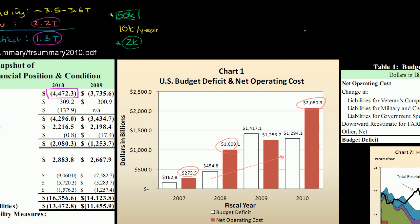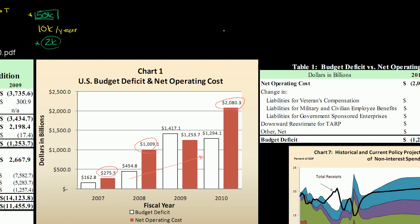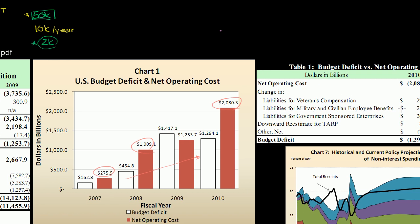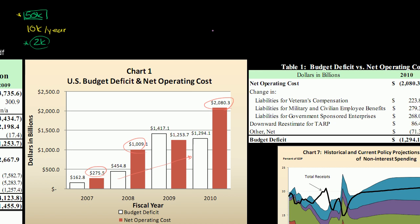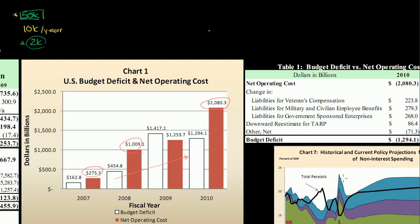This chart goes into what makes up the difference between the deficit and operating costs. It's mainly things like liabilities for veterans' compensation, military and civilian employee benefits, and government-sponsored enterprises. There's also a downward revision of TARP — you realize it will cost $86 billion more than expected in the future, even though you don't spend that $86 billion this year. If you add all of these to the budget deficit, you get the net operating costs.